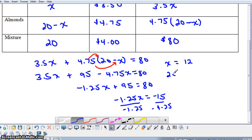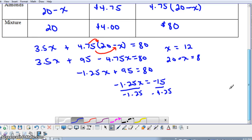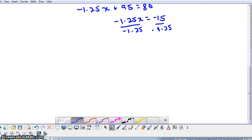That would mean that 20 minus X would be 8. In other words, we have 12 pounds of raisins and 8 pounds of almonds. And that does add to 20 pounds.